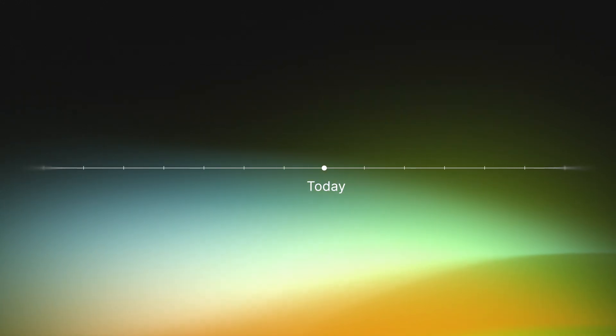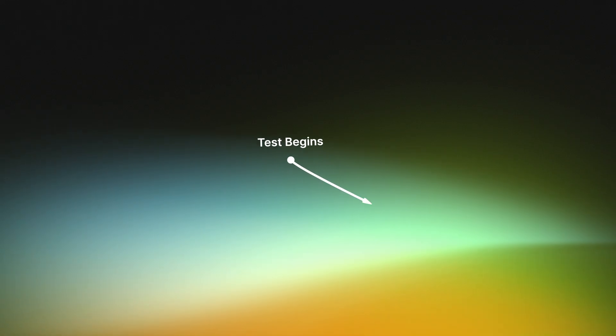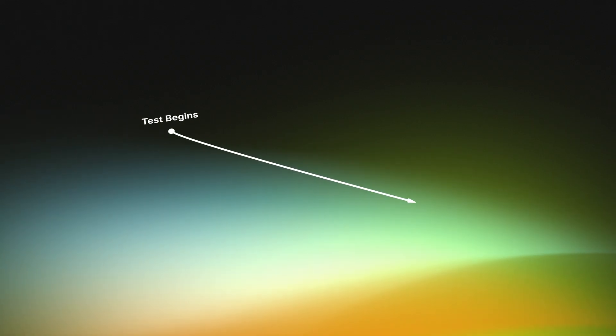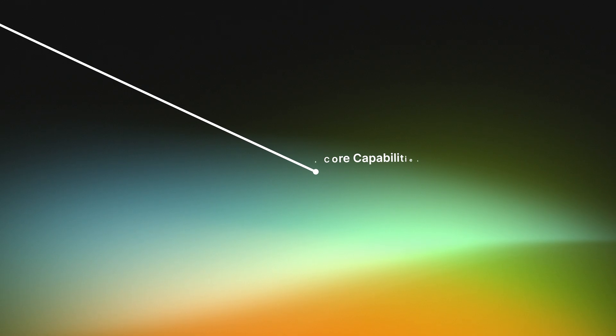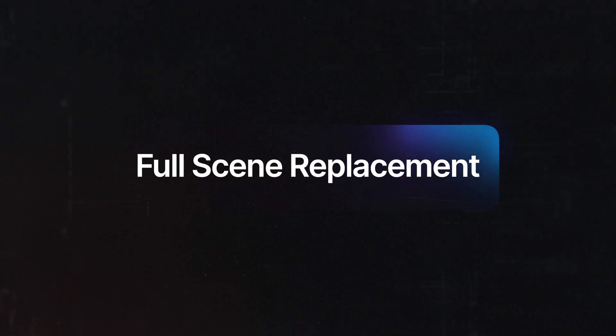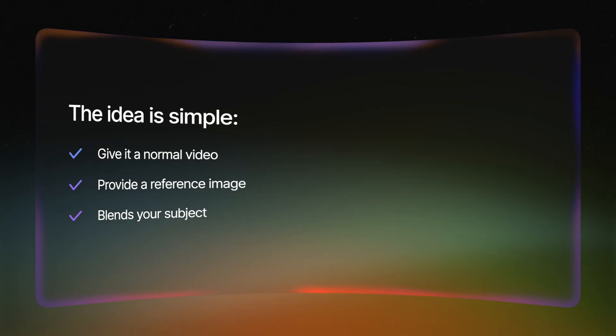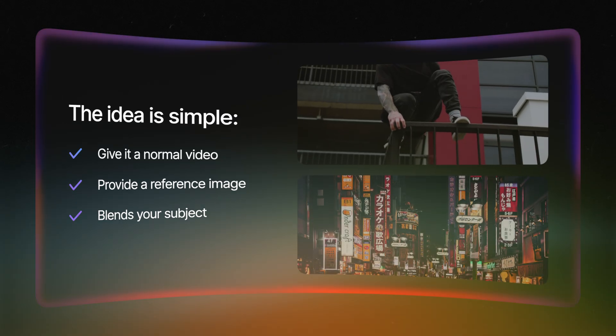Today I'm not just showing pre-made examples. We're going to test everything together step-by-step, and I'll be trying out six core capabilities that make Kling01 completely different from anything else out there. The first capability, and honestly one of the ones that surprised me the most, is Scene Replacement.